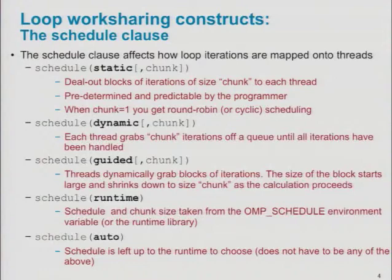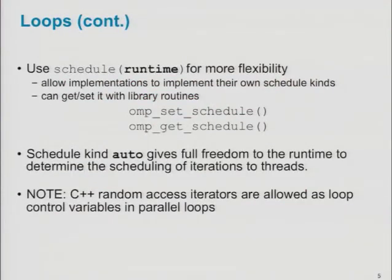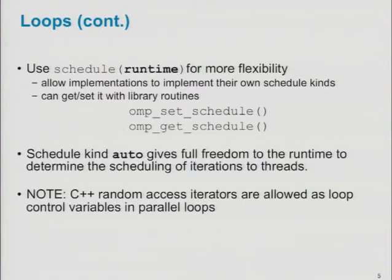The runtime clause allows you to dynamically change what the schedule is on a loop, and there are API calls — omp_set_schedule and omp_get_schedule — to set and get the current schedule applied when you use schedule(runtime) on your loop. All the examples shown so far express iteration spaces over simple integer ranges like 1 to n or 0 to n-1. That was fine for Fortran, where OpenMP was initially defined. It later evolved to C, then C++. C++ has more powerful capabilities — recently, random access iterators work just as well as a simple integer iteration space for the index variable of your for loop.